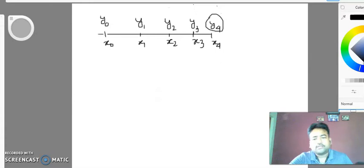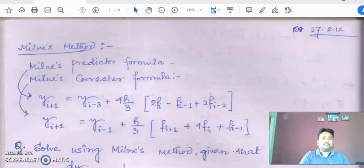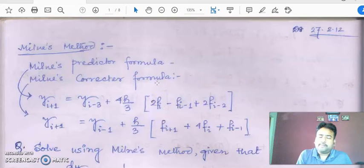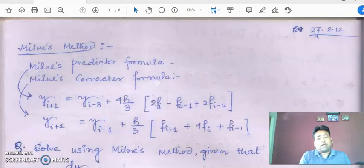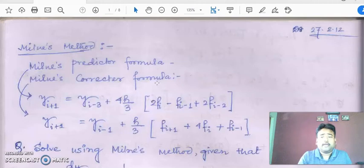So let's start with the predictor-corrector method. I'm actually directly writing the formula. If you can check, I'm writing the Milne's predictor and Milne's corrector formula. I'm not going to provide the proof because the proof is not in the syllabus. I need to show you the formula so we can start solving problems with the formula.